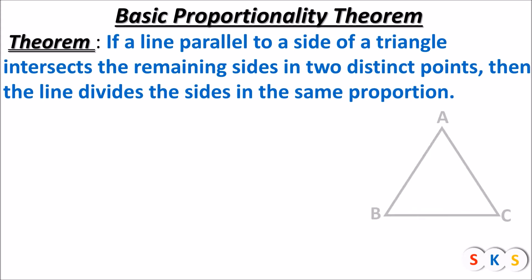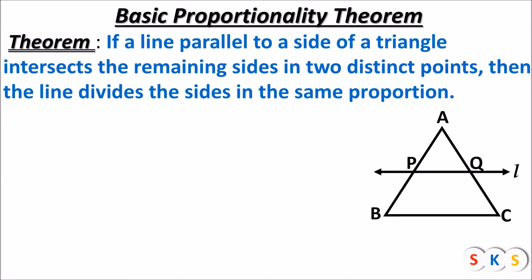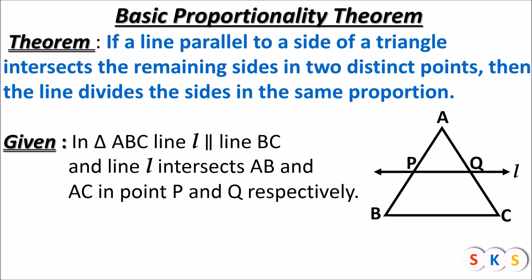Here we will take one triangle ABC. We will draw a line parallel to any one side of the triangle, and that line should intersect the remaining two sides in two distinct points. We have a line L which is parallel to side BC, and line L intersects side AB and side AC at points P and Q respectively.